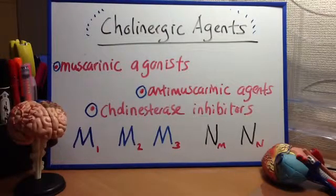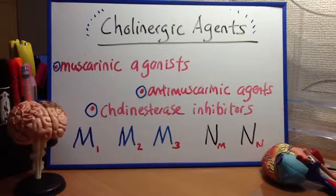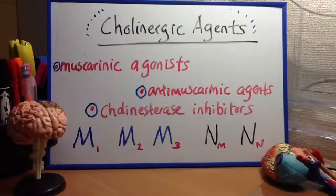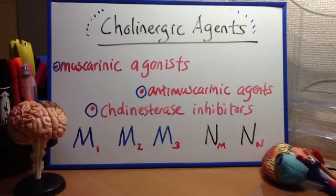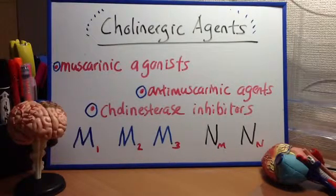It's time to talk about the cholinergic agents. We have antinicotinic agents, muscarinic agents, antimuscarinic agents, and cholinesterase inhibitors. We're not going to talk about the antinicotinic agents. We're going to start off with the muscarinic agonists — for example, pilocarpine or bethanacol — then the antimuscarinic agents, atropine, benztropine, or ipratropium, focusing on atropine. Then the cholinesterase inhibitors, such as neostigmine and tacrine.